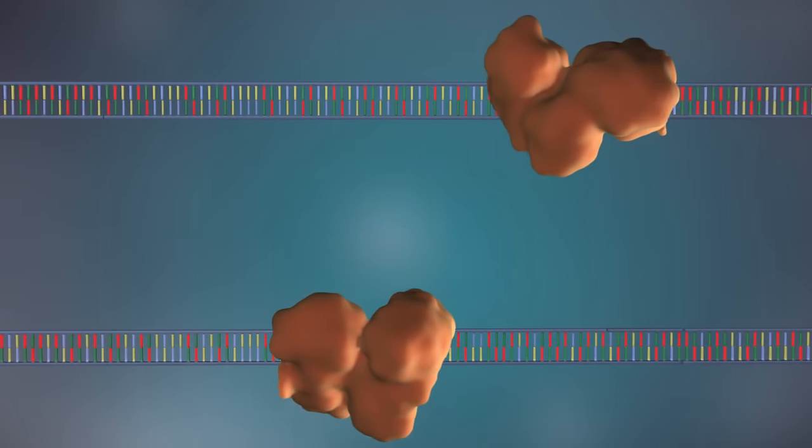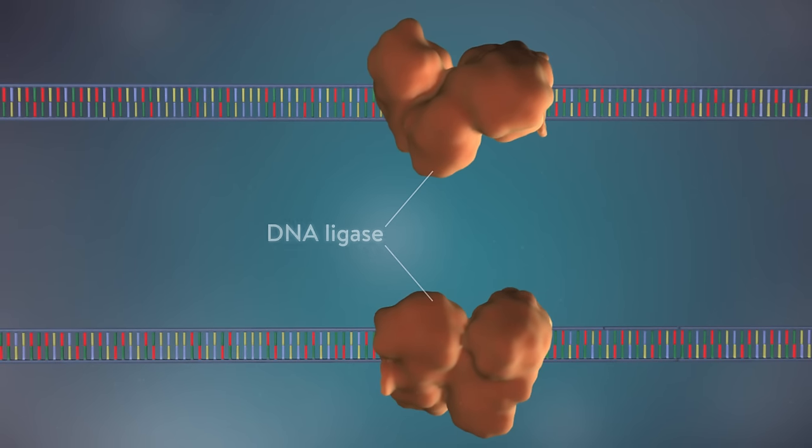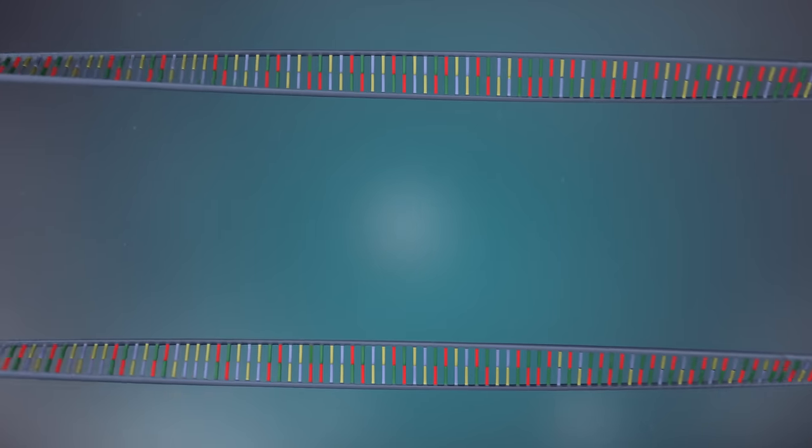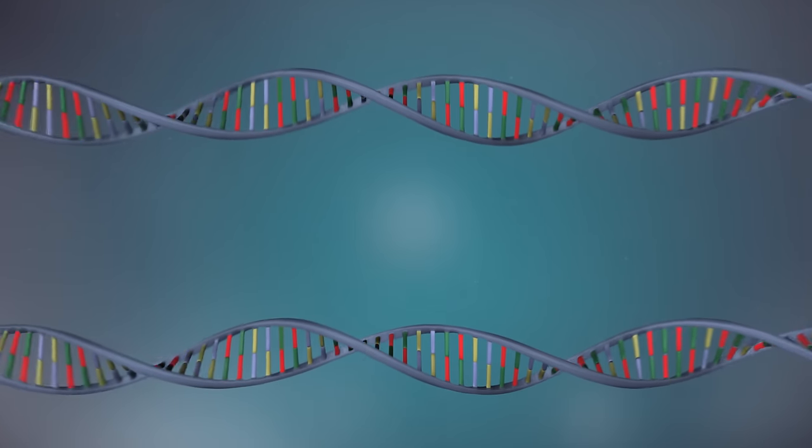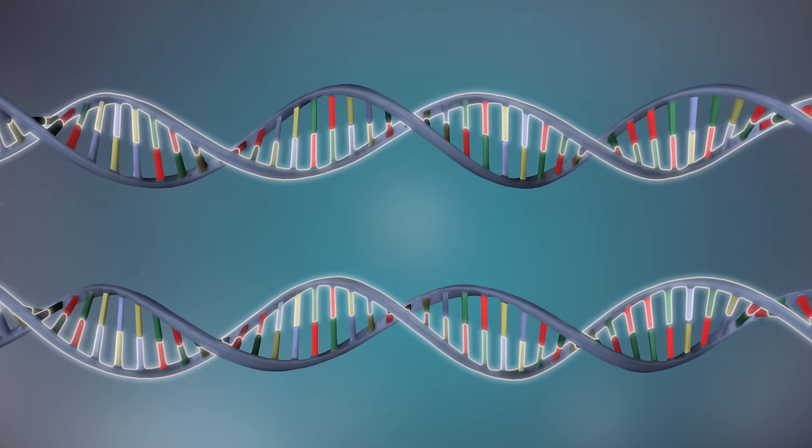Finally, the enzyme DNA ligase seals up the fragments of DNA in both strands to form a continuous double strand. DNA replication is described as semi-conservative because each DNA molecule is made up of one old, conserved strand of DNA and one new one.